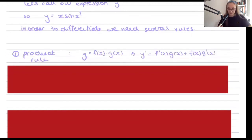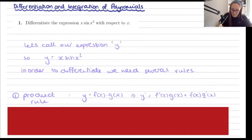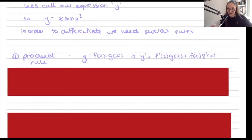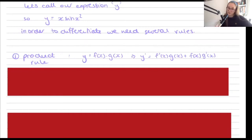In order to differentiate this, we need the product rule, because our expression is a product of two different things: x and sin(x²). You use the product rule if they are two functions of the thing you're differentiating by. Since we're differentiating with respect to x and both x and sin(x²) are functions of x, it says that if y = f(x)·g(x), then y' = f'·g + f·g'.